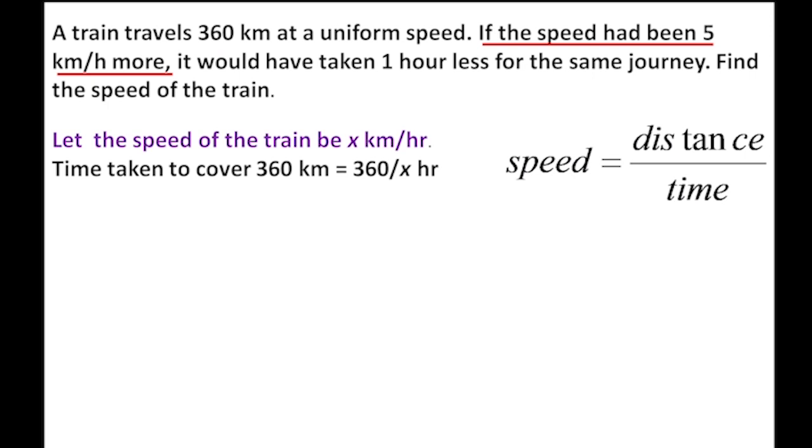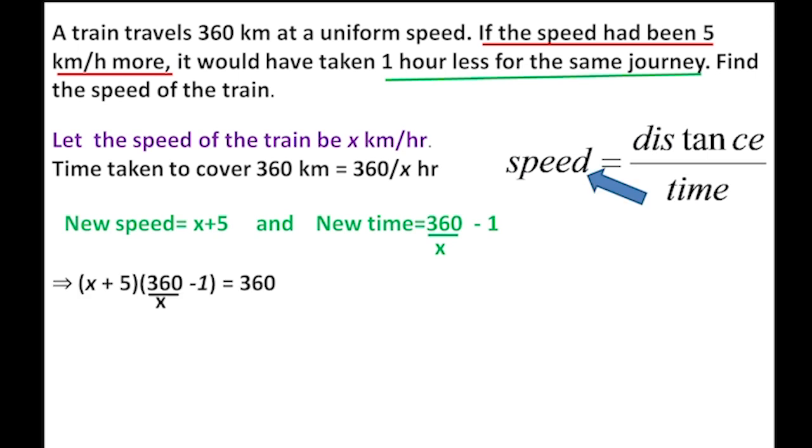If the speed had been 5 kilometers per hour more, the new speed is x plus 5. The new time would be 360 divided by (x plus 5). Since it takes 1 hour less, we get: (x + 5) times (360/x - 1) equals 360.